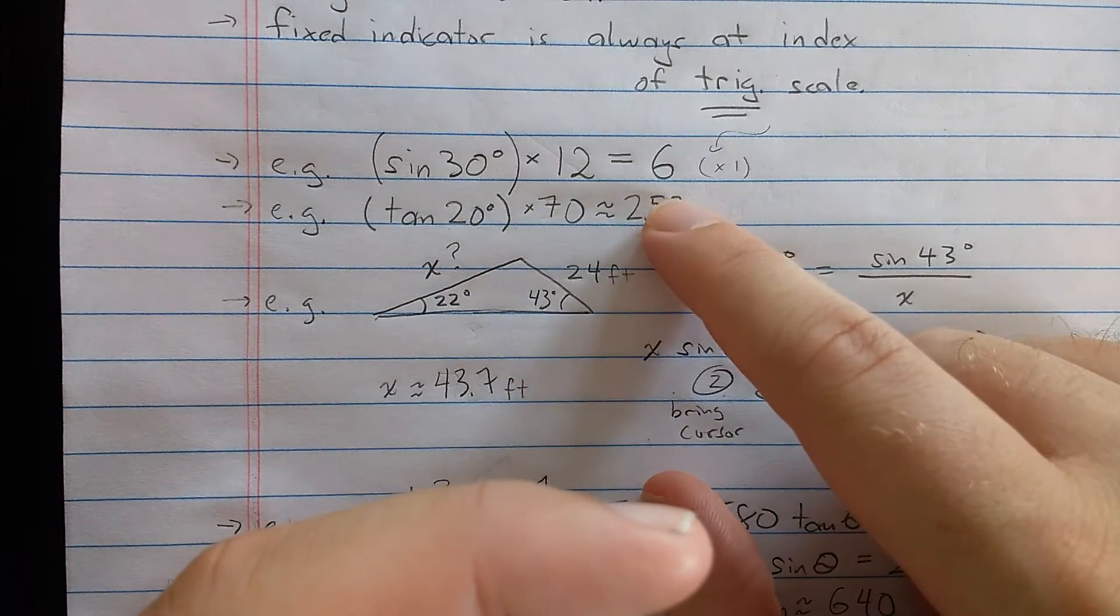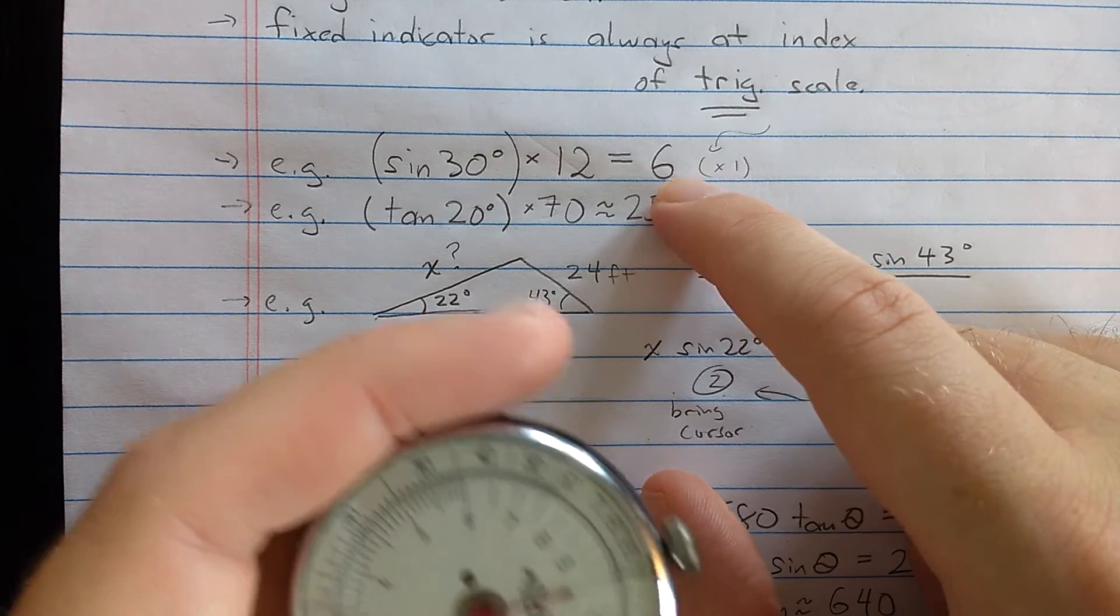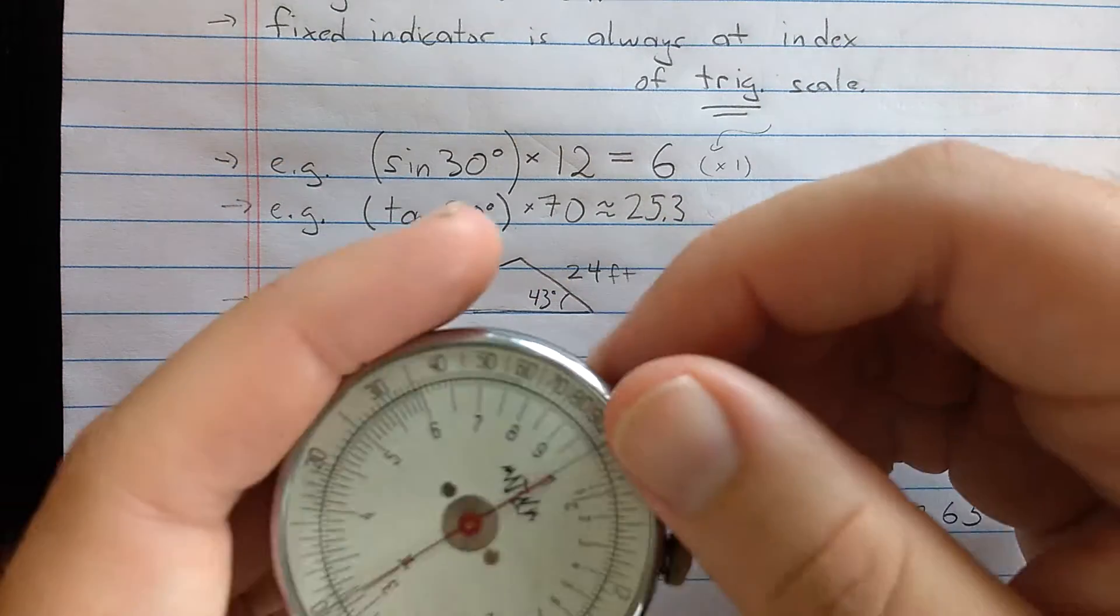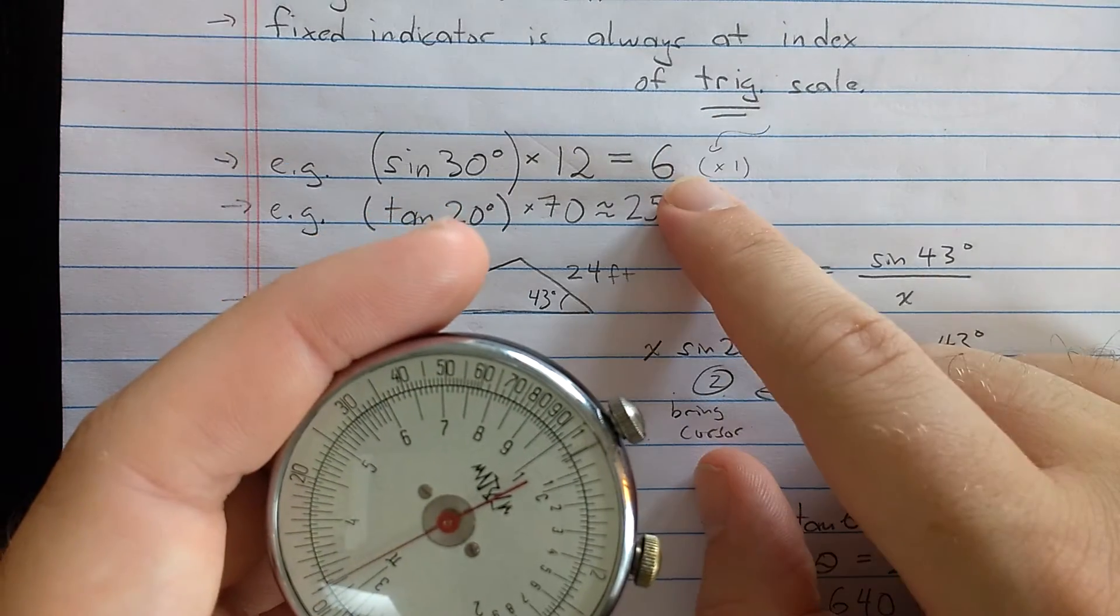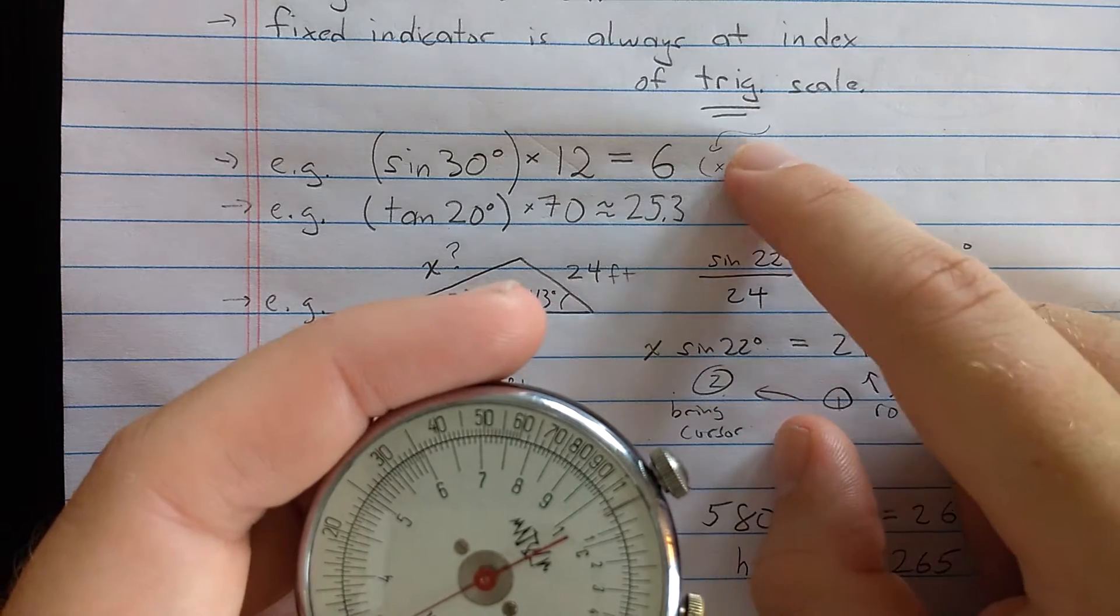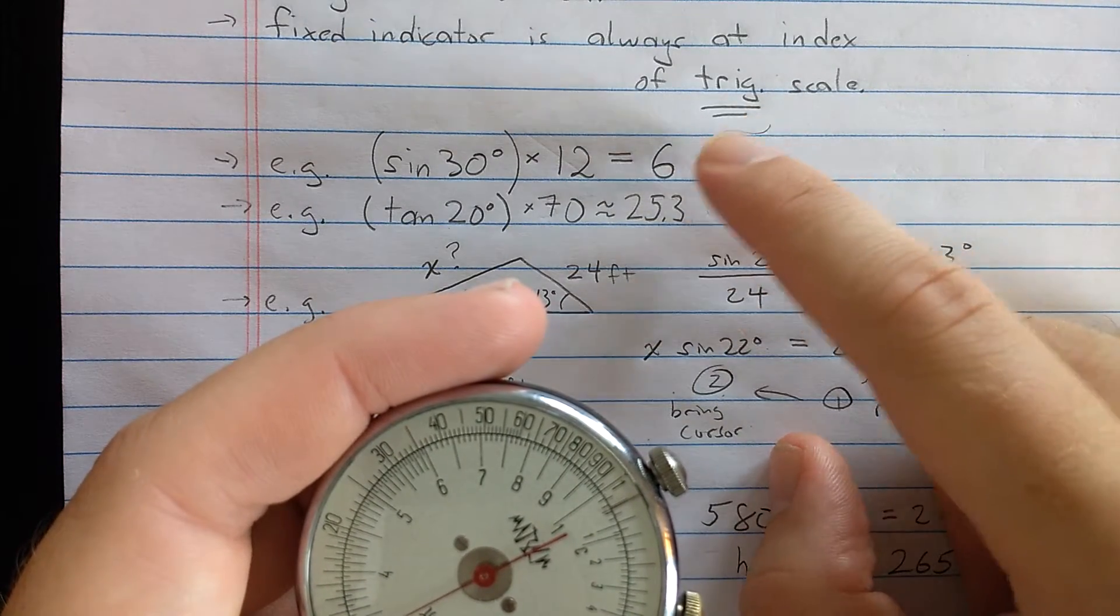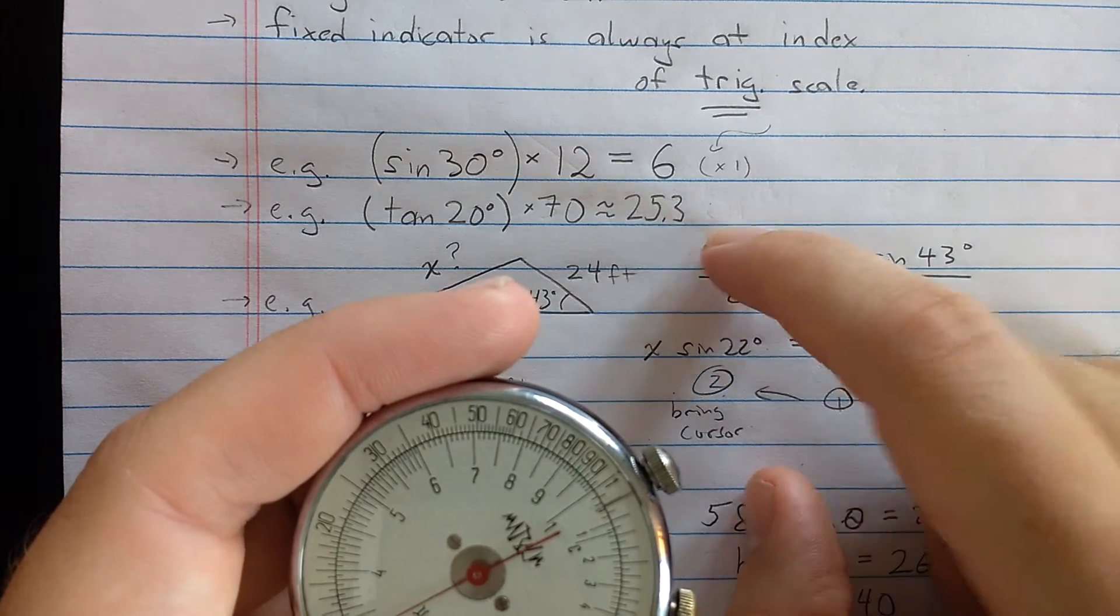For the common calculations, you just want to do sine times something, tangent times something. You can use the fixed indicator here as the other thing there. So it's this number times 1. Let's see how you could do that.